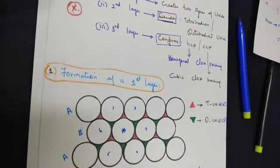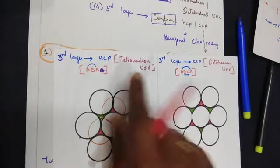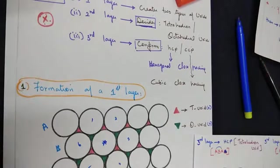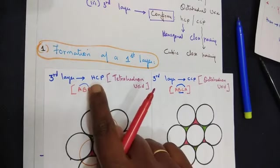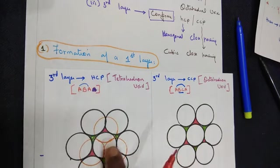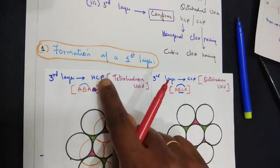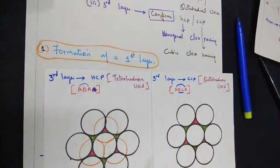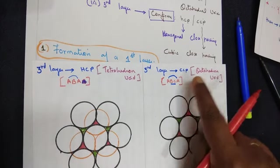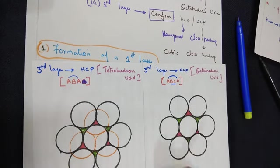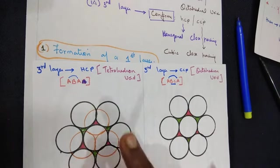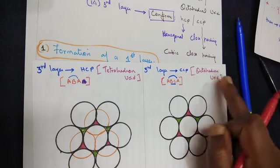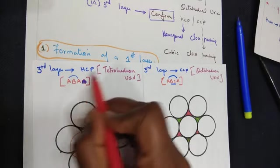Let's move on to the third layer. Layer one creates the two types of void. Layer two creates the tetrahedral void or octahedral void. Layer three alone decides whether the packing is hexagonal close packing or cubic close packing. Hexagonal close packing covers up the tetrahedral void, and CCP arrangement covers up the octahedral void. So remember: HCP covers the tetrahedral void, and cubic close packing covers the octahedral void.